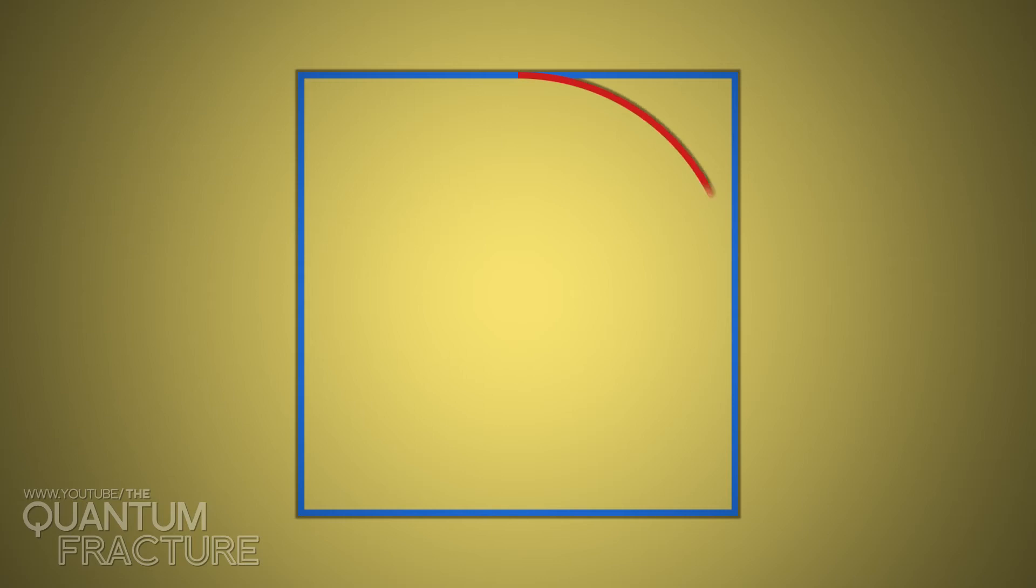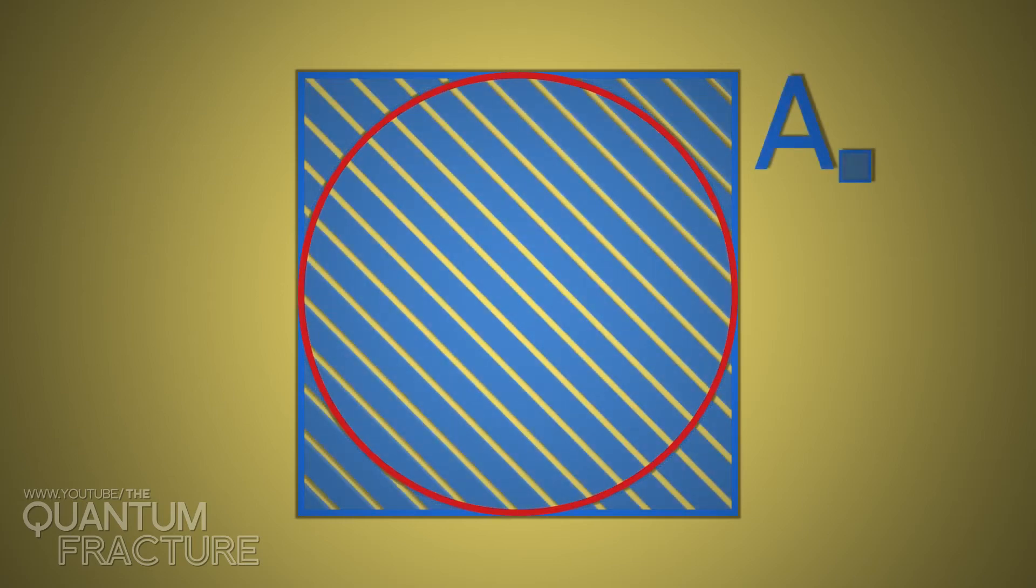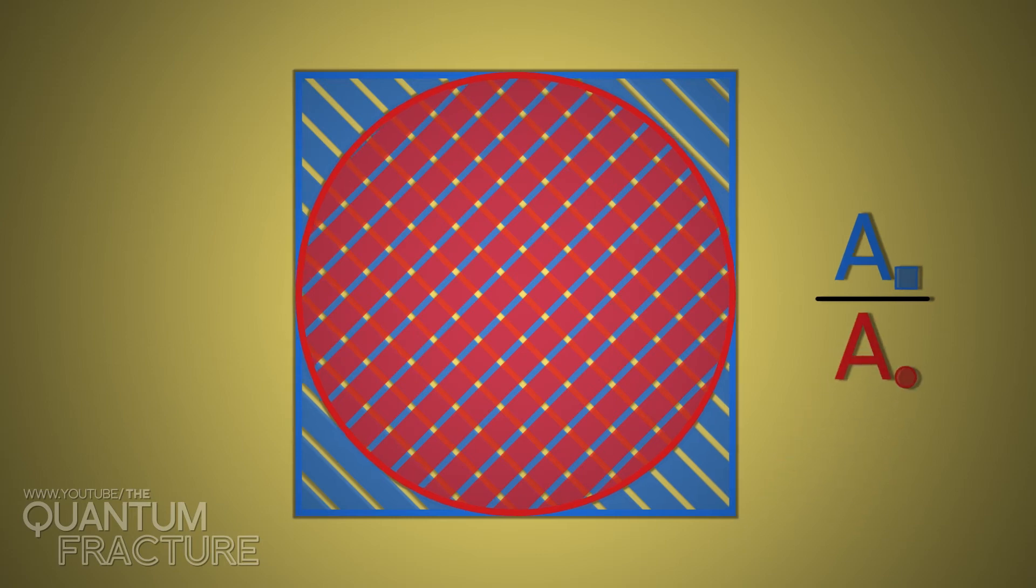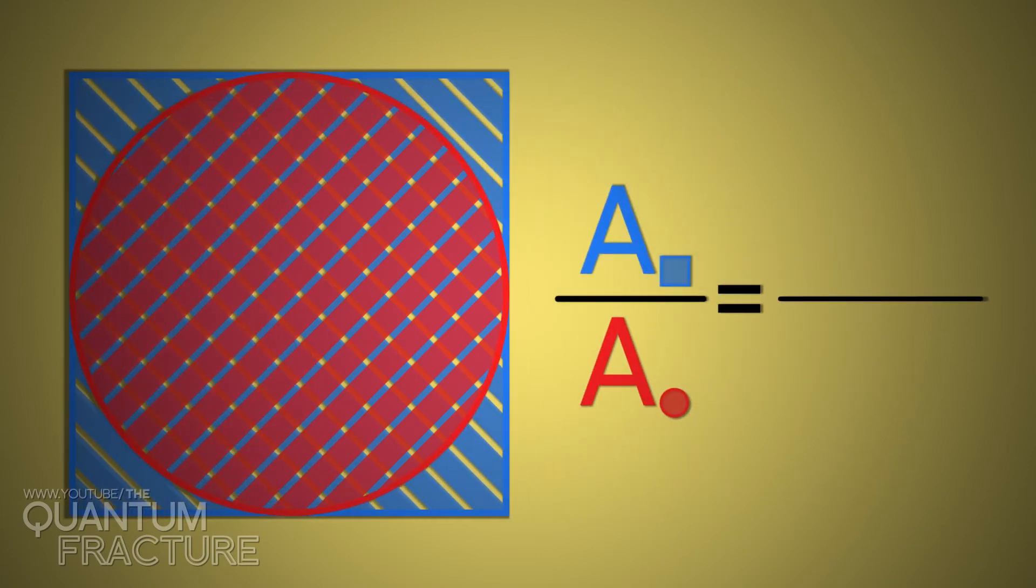This is how we do it. We build a square and draw a circle in it. Let's say that I try to divide the area of the square by the area of the circle. As it is well known, the square's area is its side squared, while the circle's is the result of the multiplication of pi and its radius squared.